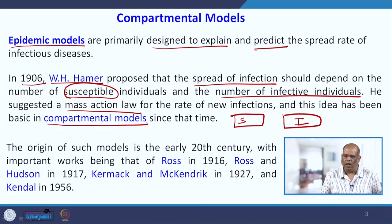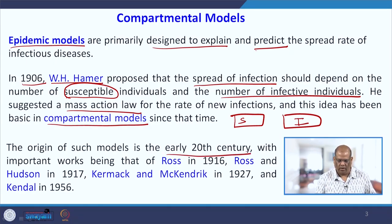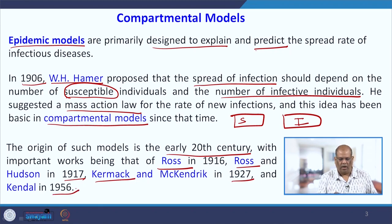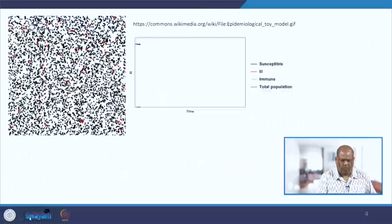We will be looking into some compartmental models. The origin of such models is in the early 20th century. Famous names include Ross in 1916, Ross and Hudson in 1917, Kermack and McKendrick in 1927, and Kendall in 1956. Let us start with a very simple kind of model: the susceptible and infected (SI) model.